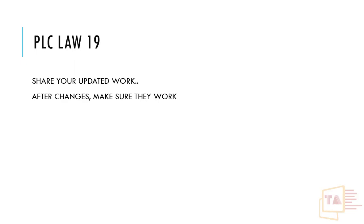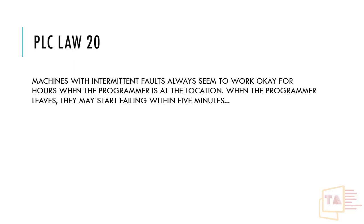Automatic and psychological park issues — sensors, cables, or damage can cause intermittent faults. These are the hardest to find. Machines with intermittent faults may work fine for hours when the programmer is at the location. It may take half an hour or even one day, and then the failure happens again and you don't know where it came from.